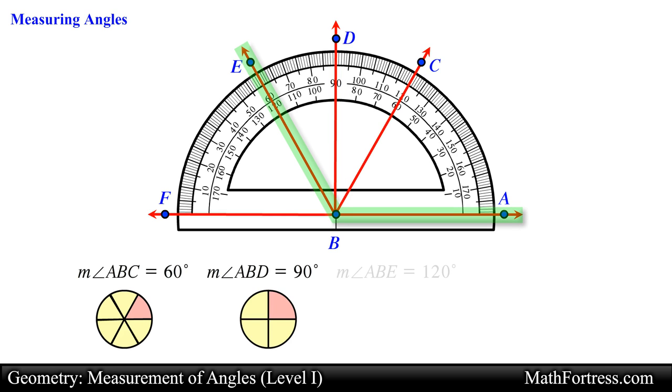Angle ABE measures 120 degrees and is equivalent to one third of a revolution around a circle. Angle ABF measures 180 degrees and it is equivalent to one half a revolution around a circle.